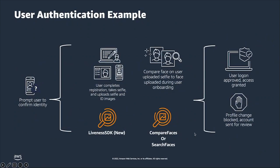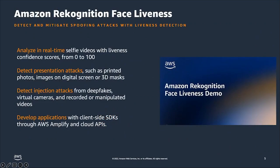You can also leverage Rekognition's solutions in ongoing authentication or step-up authentication. For example, if an existing user wants to do a high-value transaction, the bank may want to do another liveness check to confirm it's an actual live person initiating it, and then do another face match to confirm it is in fact the correct user trying to perform that high-value transaction.